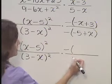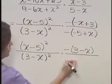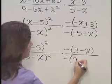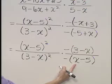Let's write that as the negative of 3 minus x. And in the denominator, that's the negative of x minus 5, just so that our eyes can see the common factors here.